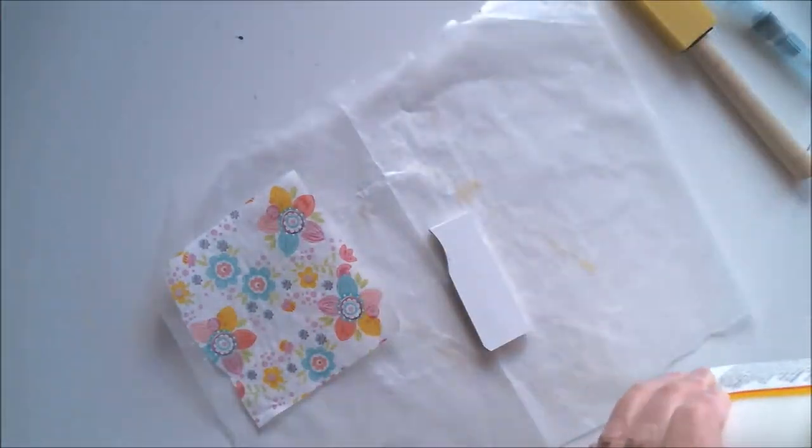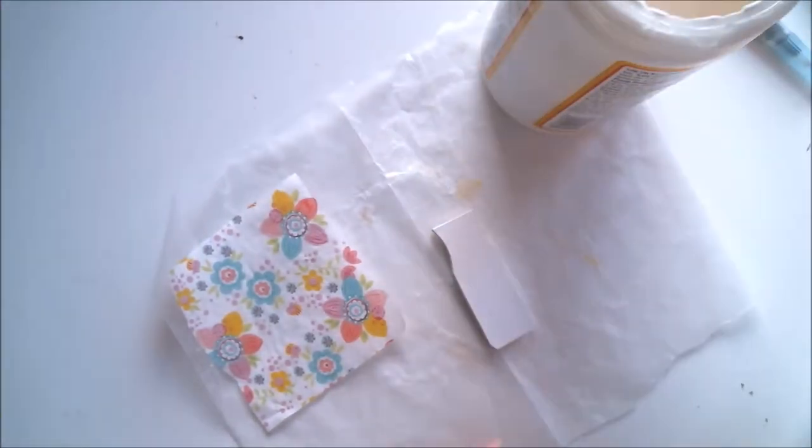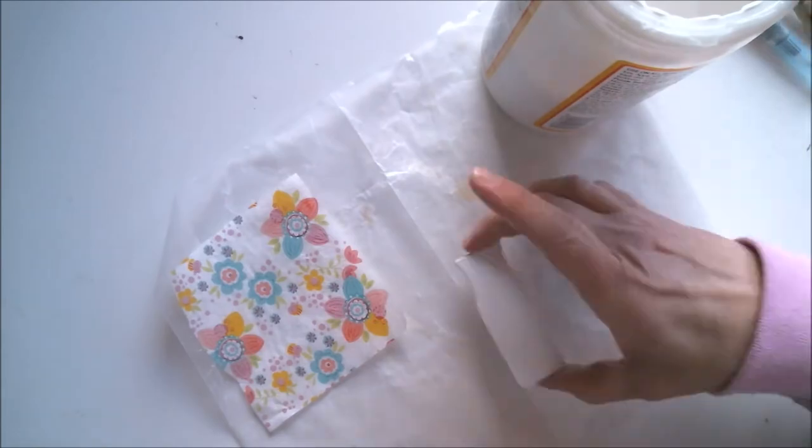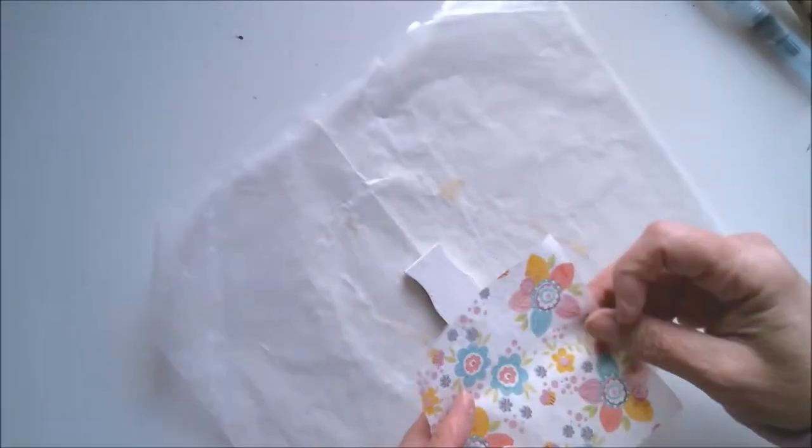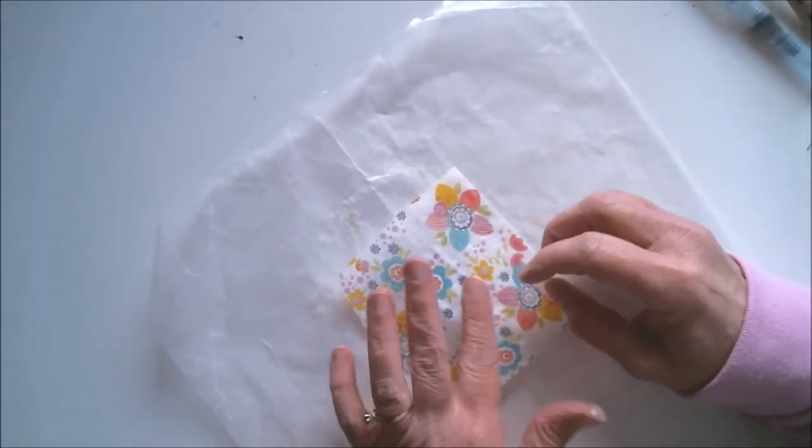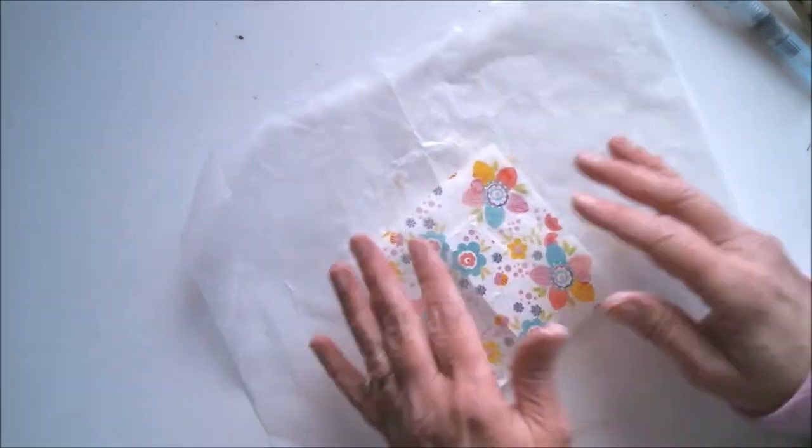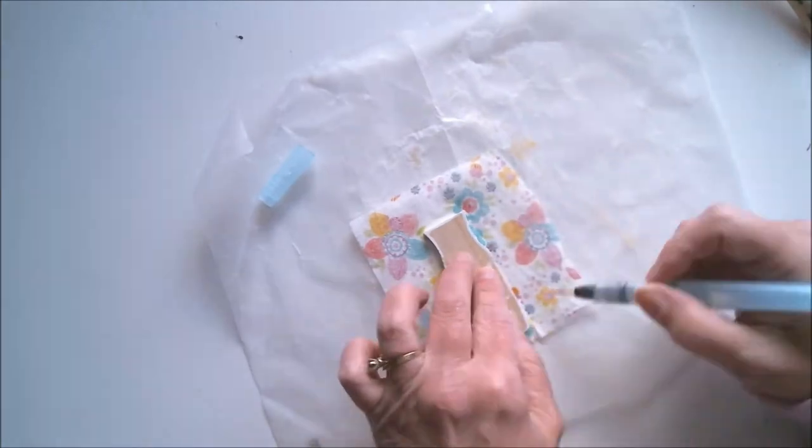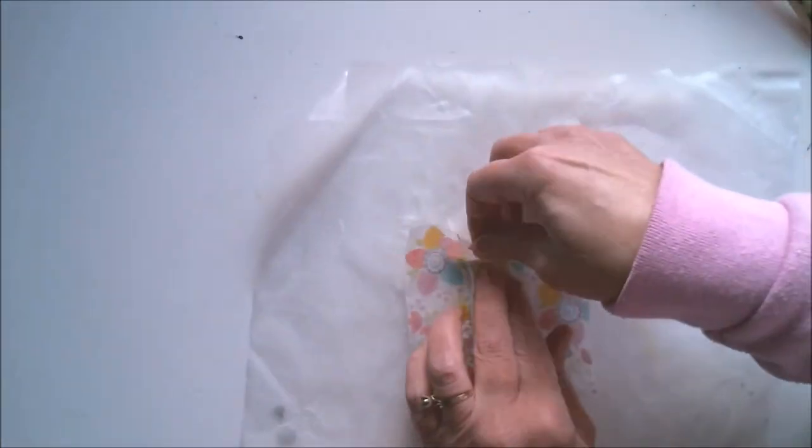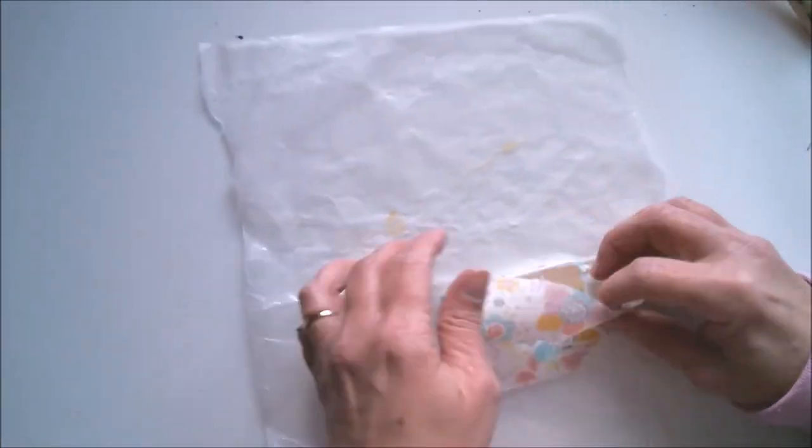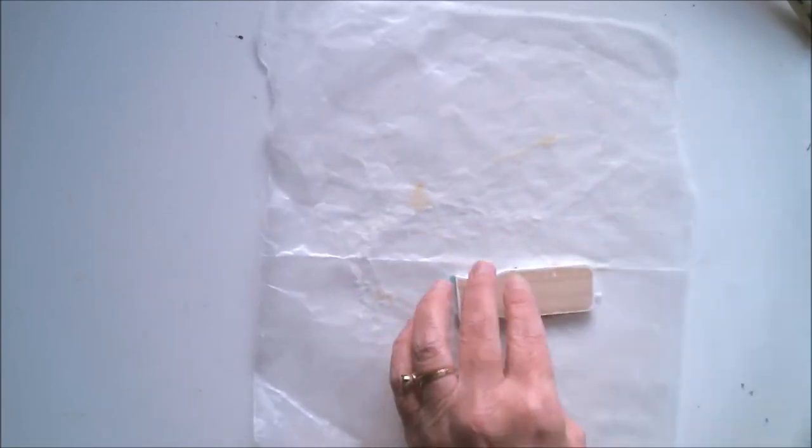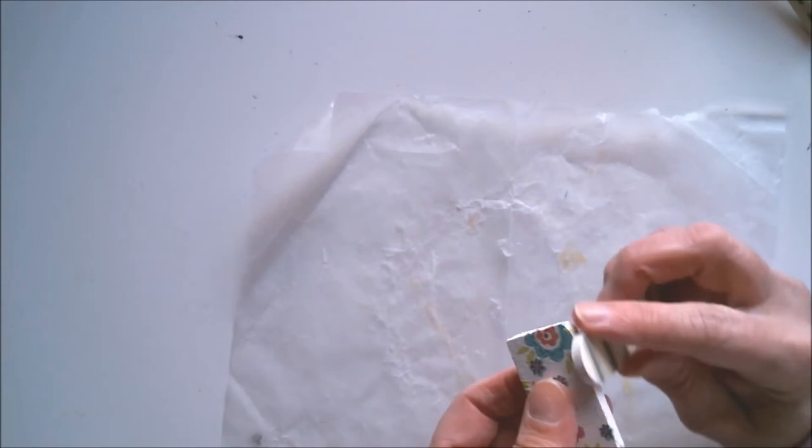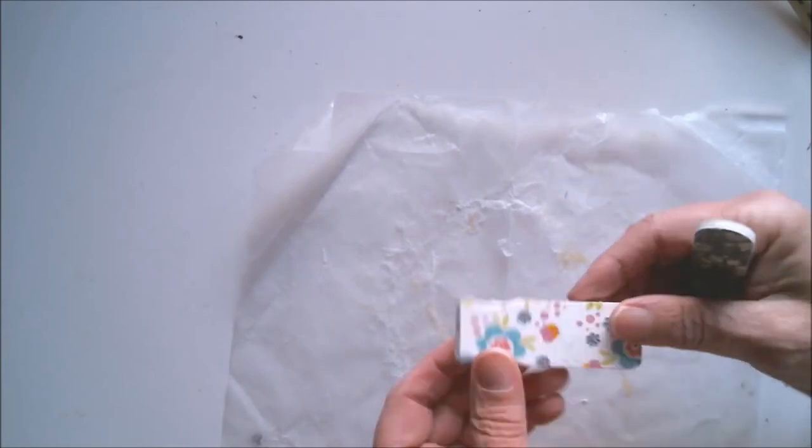Next, I'm going to apply some Mod Podge and then carefully place the napkin over the top and press it gently to make sure it completely adheres. Do not rub it because that will tear the napkin. Just pat it gently. And then I like to use a wet paint brush or in this case a water brush to trace around the edges that I want removed. It just makes it easier to tear the excess napkin away. And you can always use a fingernail file or a sanding block to remove more of the napkin if needed.